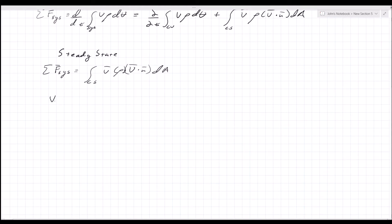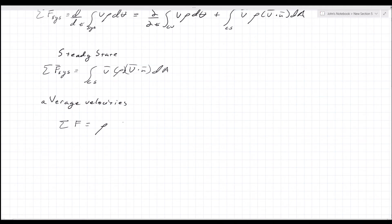Let's simplify further by assuming we're only dealing with average velocities. Then the sum of the forces is equal to the density of the system times the velocity of the surface.